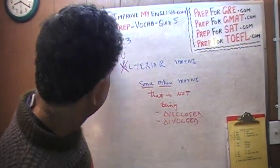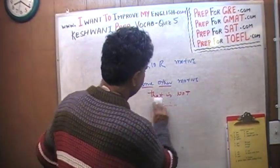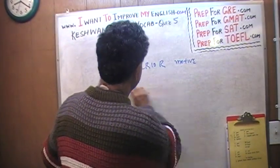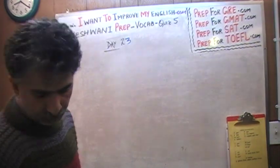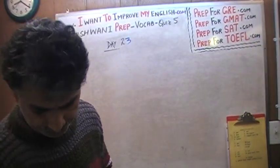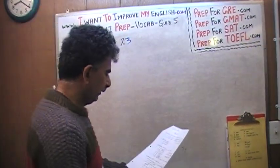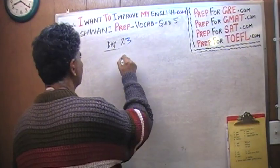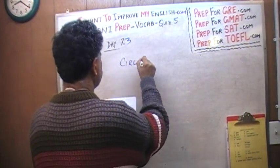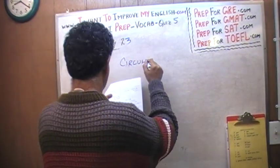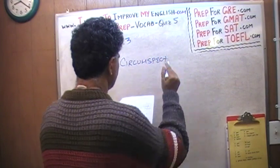So we learned the word 'ulterior' and the word 'divulge.' Divulge simply means not to disclose, not to make public. The next word we learned was 'circumspect.'